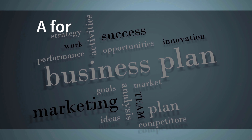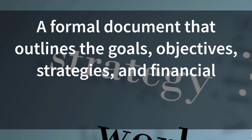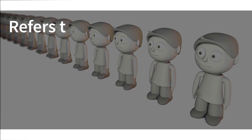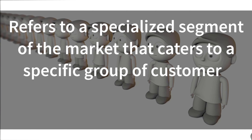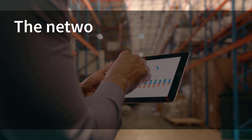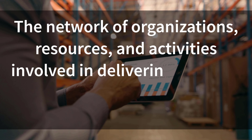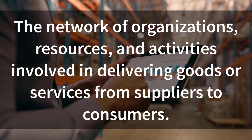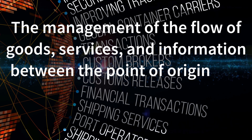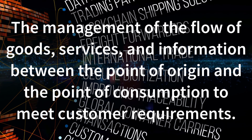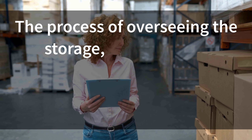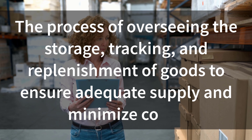Business Plan: A formal document that outlines the goals, objectives, strategies, and financial forecasts of a business or startup. Niche Market: Refers to a specialized segment of the market that caters to a specific group of customers with unique needs, preferences, or characteristics. Supply Chain: The network of organizations, resources, and activities involved in delivering goods or services from suppliers to consumers. Logistics: The management of the flow of goods, services, and information between the point of origin and the point of consumption to meet customer requirements. Inventory Management: The process of overseeing the storage, tracking, and replenishment of goods to ensure adequate supply and minimize costs.